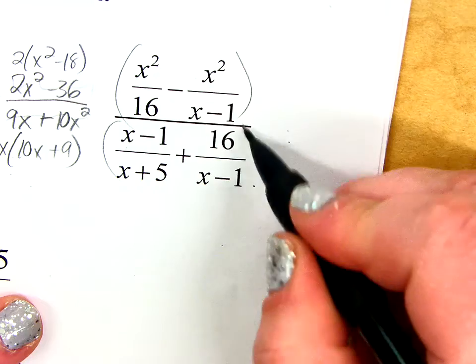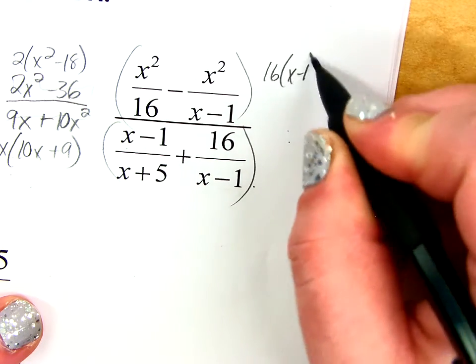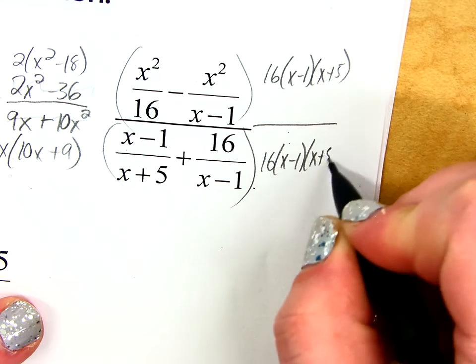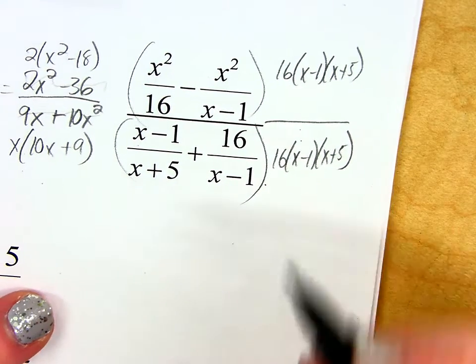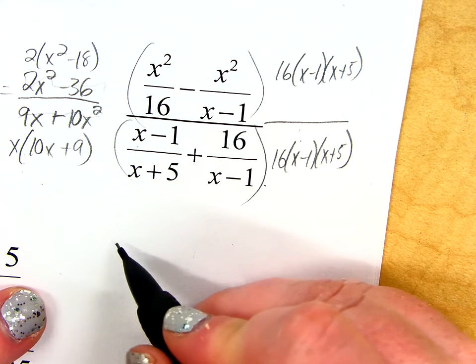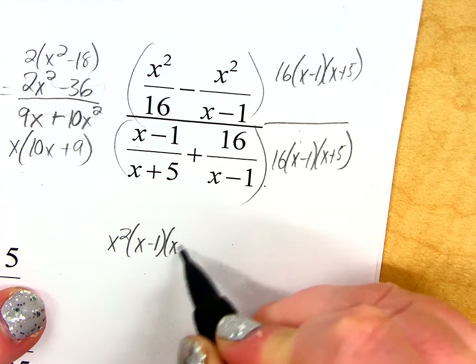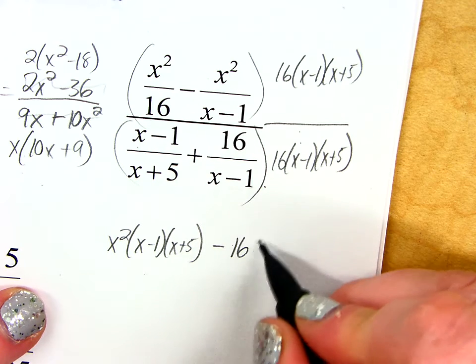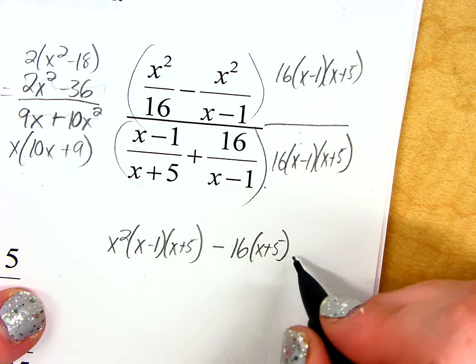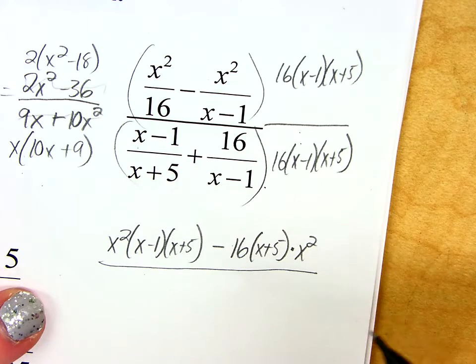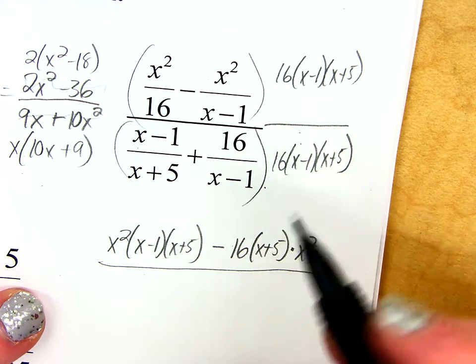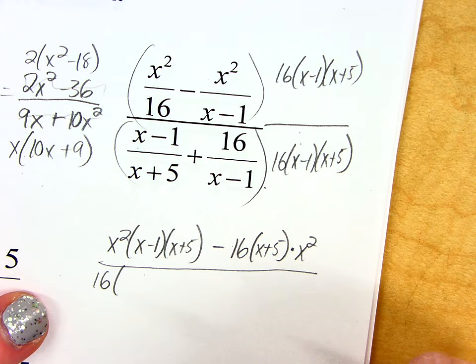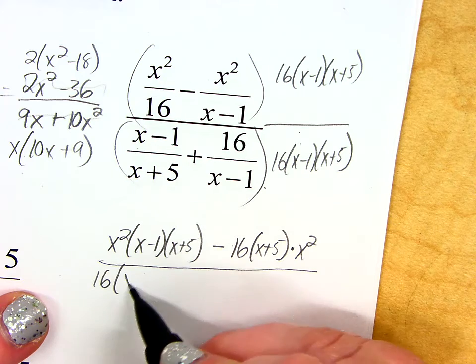Okay, so let's see, 16, x minus 1, and x plus 5 on top and on bottom. I'll actually put my work down here. Okay, so let's go.